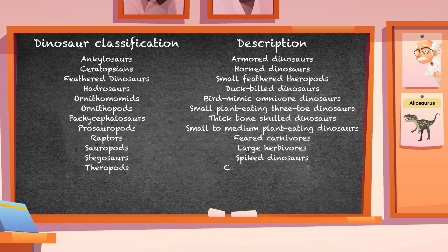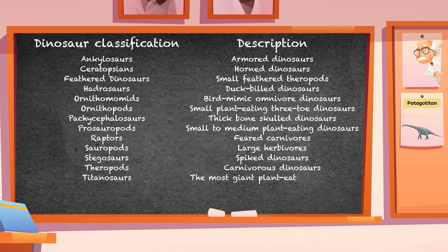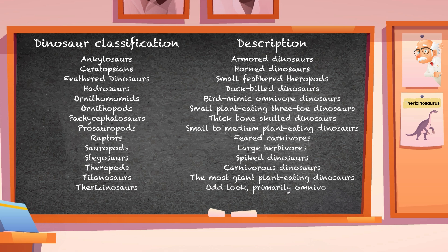Theropods: carnivorous dinosaurs. Titanosaurs: the most giant plant-eating dinosaurs. Therizinosaurs: odd-looking, primarily omnivores. Tyrannosaurs: powerful carnivores.